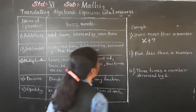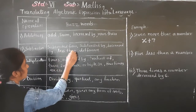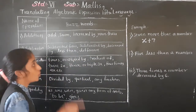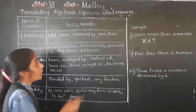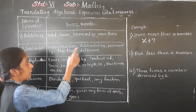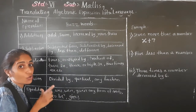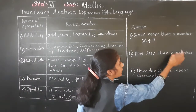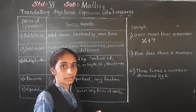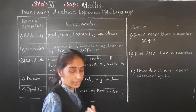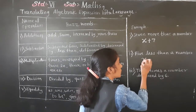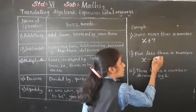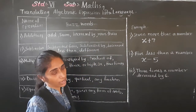Five less than a number. 'Less than' is in the subtraction group. These words are used for subtraction: subtracted from, subtracted by, decreased by, difference, less than. Five less than a number — a number we don't know, we consider x. Five is less than a number, so we write x minus 5.